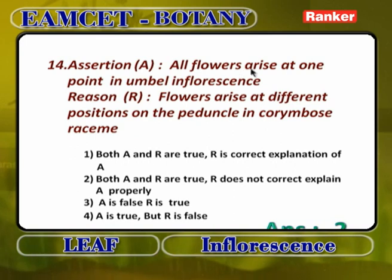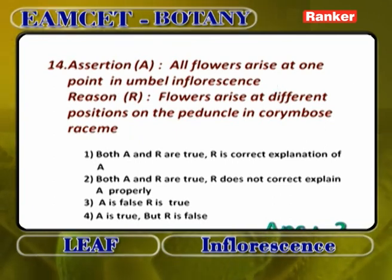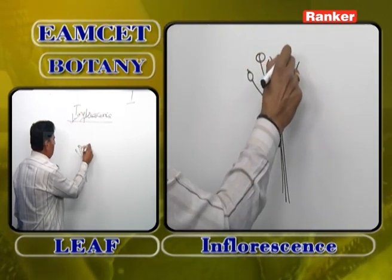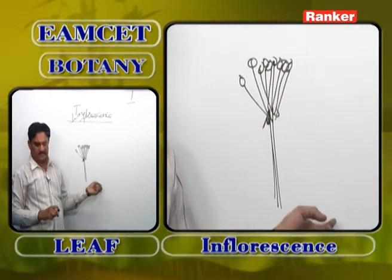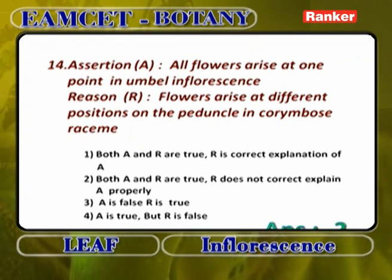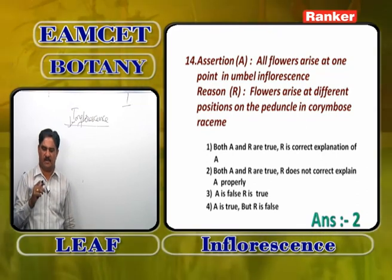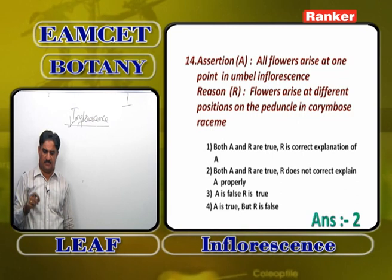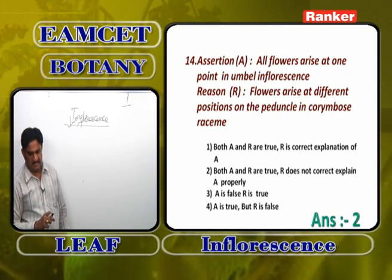Assertion: all flowers arise at one point in umbel inflorescence — correct, because peduncle stops its growth, all bracts form an involucre, and pedicellate flowers develop from a single point. Reason: flowers arise at different positions on the peduncle in corymb's raceme — also correct. Both are true but not related to each other. So both A and R are correct but R does not explain A properly, since they describe different inflorescences.